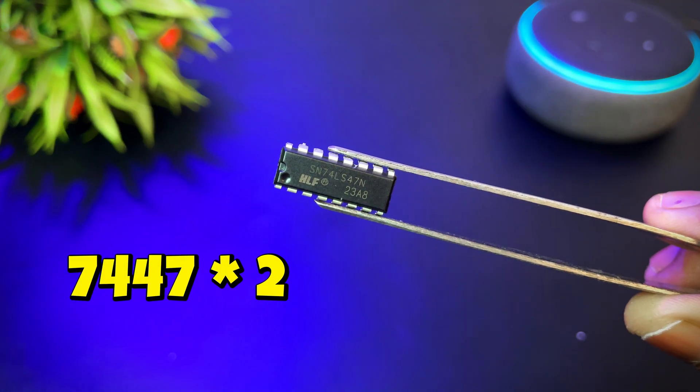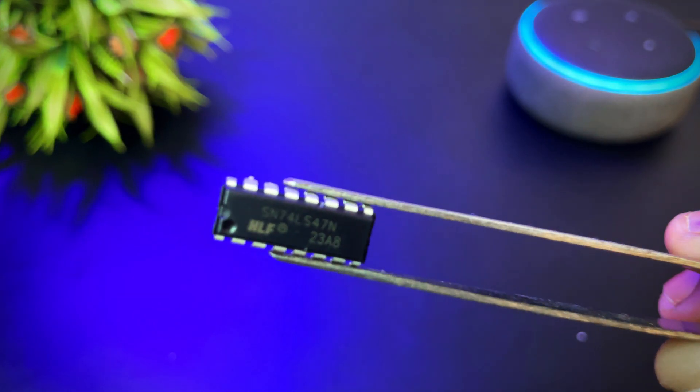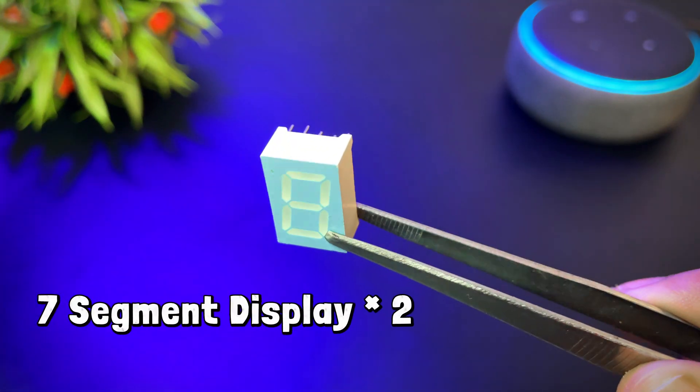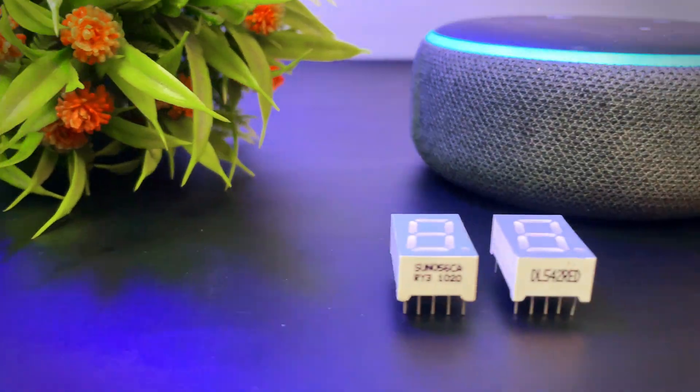This is the BCD to 7 segment decoder. It takes the output to run the display. This is common anode 7 segment display. And I have used 2 displays for my project.